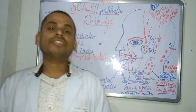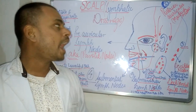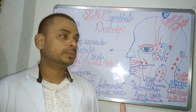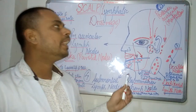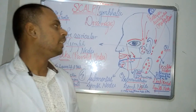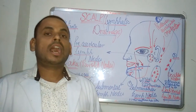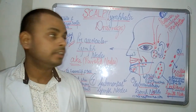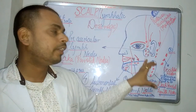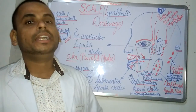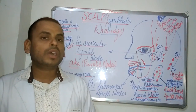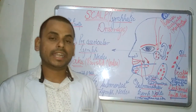This was all about the lymphatic drainage of the scalp and the associated lymph nodes of the head and neck region, covering the regions that drain into these lymph nodes. This pictorial representation helps us easily understand the drainages occurring from the various regions of the head and neck.